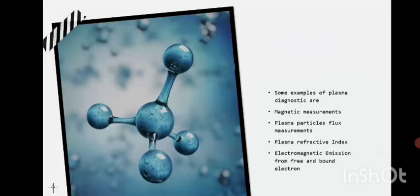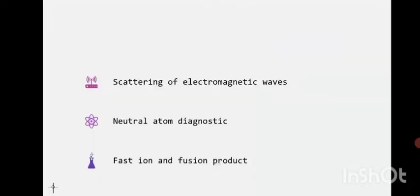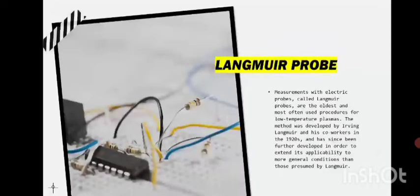Some examples of plasma diagnostics are magnetic measurement, plasma particle flux measurement, plasma refractive index, electromagnetic emission from free and bound electrons, scattering of electromagnetic waves, neutral atom diagnostics, fast ion fusion and fusion products, etc.